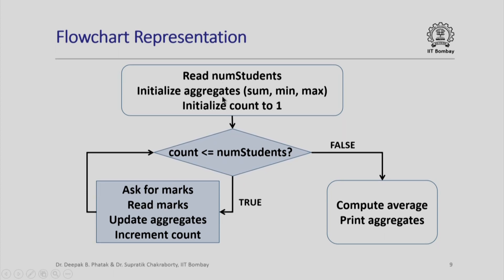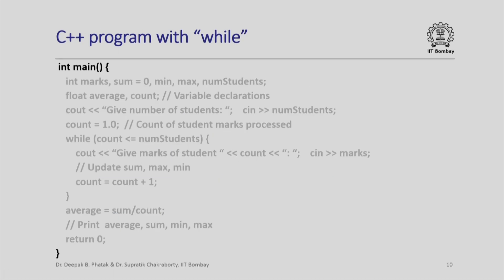We read the number of students, initialize aggregates, initialize a counter to 1, then check if the counter is less than or equal to the number of students. If so, we ask for marks, read marks, update aggregates, increment the count, and loop back. Once all students' marks are processed we exit and compute the average and print aggregates. The loop condition, loop body, program before the while loop, and program after the while loop all match the while loop flowchart pattern exactly.